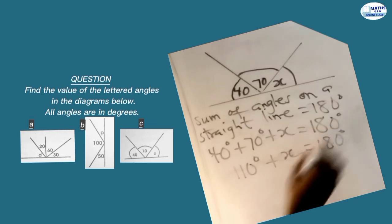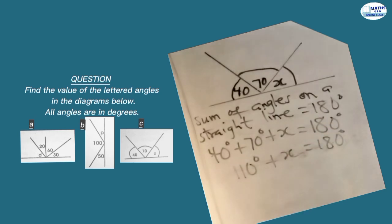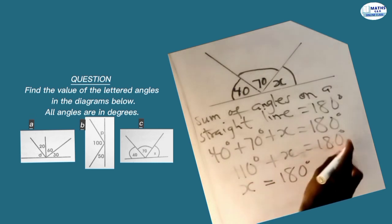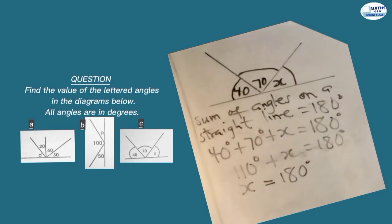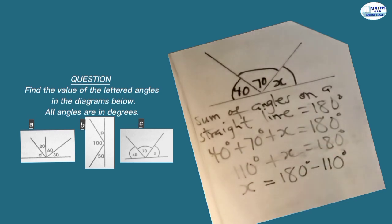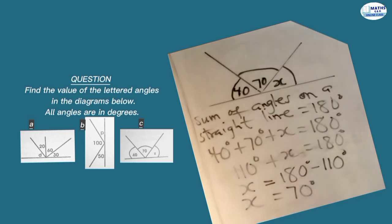We make x the subject by grouping like terms. So x equals 180 degrees minus 110 degrees. Therefore x equals 70 degrees. This is how we find the value of angles when they are on a straight line.